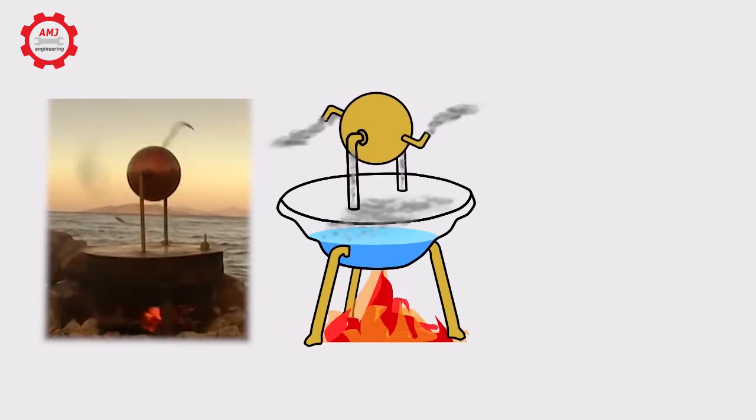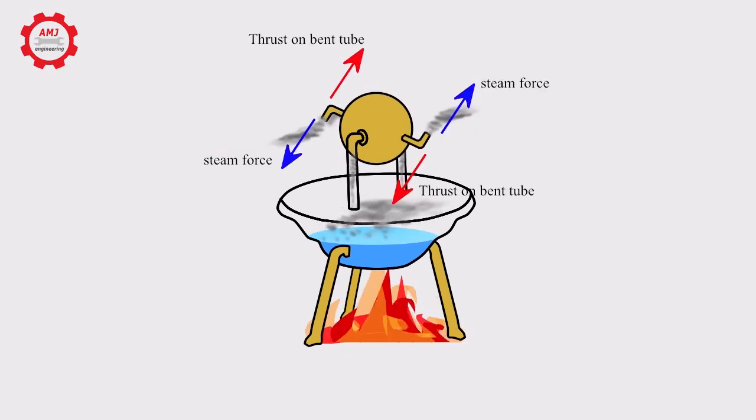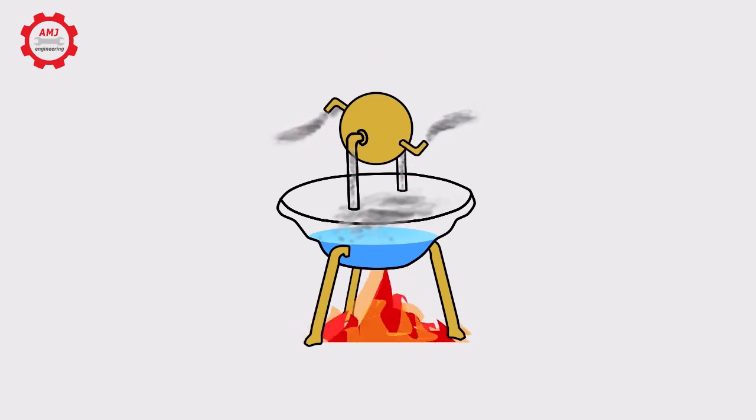Newton's third law states that every action has an equal and opposite reaction. As steam escapes through the nozzles at high speed, it generates thrust on the tube with equal force, causing the sphere to rotate on its axis.